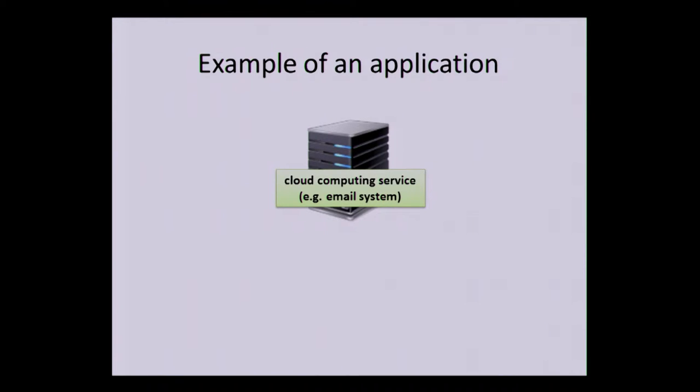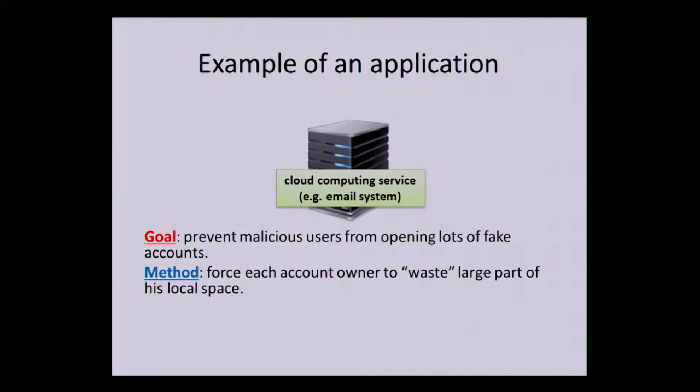So an example of an application. Suppose we have a cloud service like email system, Gmail, something like this, and the goal is to prevent malicious users from opening lots of fake accounts. So let's say we will force each account owner to waste a large part of his local space. Whenever you open a Gmail account, you have to allocate 100 gigabytes on your hard disk. What's very important, this is one of the most important features of this primitive, is this space needs to be allocated for the whole duration of the period where the user is using the system. So as long as I want to use the system, I will have to waste this 100 gigabytes. It's not enough that I do it once. It will have to stay there.